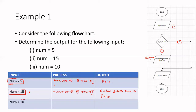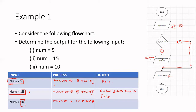Let's now look at the third set of input. What happens when num equals 10? So I have input num with value 10. My process is: num greater than 10. My value for num is 10, so is 10 greater than 10? Is 10 bigger than 10? False — 10 is not bigger than 10; 10 is equal to 10, so that condition is false. Because the condition is false, I follow the false branch, which takes me there, and I then output hello, and finally stop.